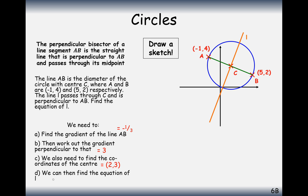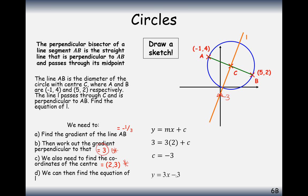Now we need to find the equation of the line. We know the gradient and a coordinate it intersects, so we substitute into y equals mx plus c. m is 3, the x coordinate is 2, and the y coordinate is 3. Working out c gives us minus 3. So our equation is y equals 3x minus 3.